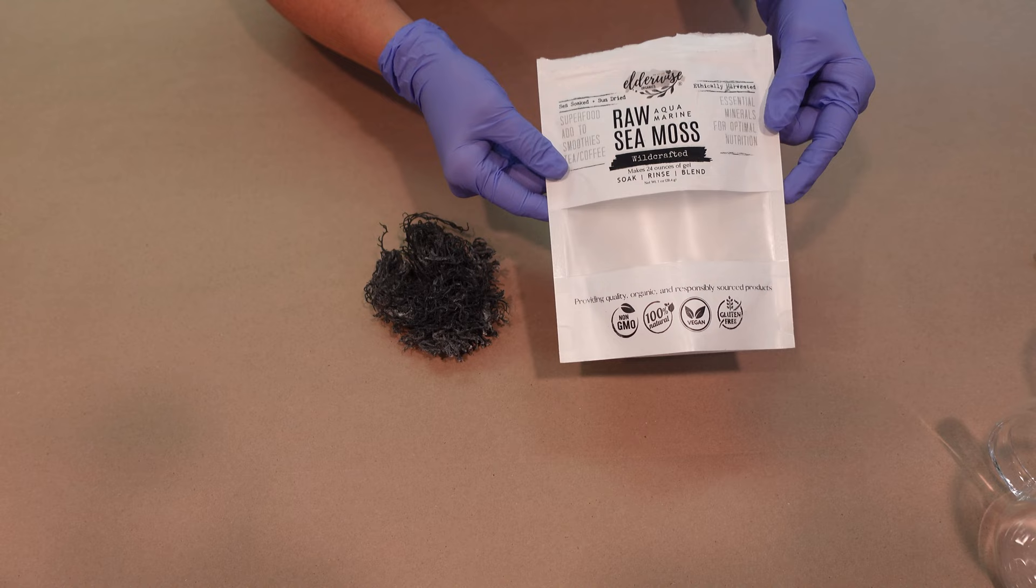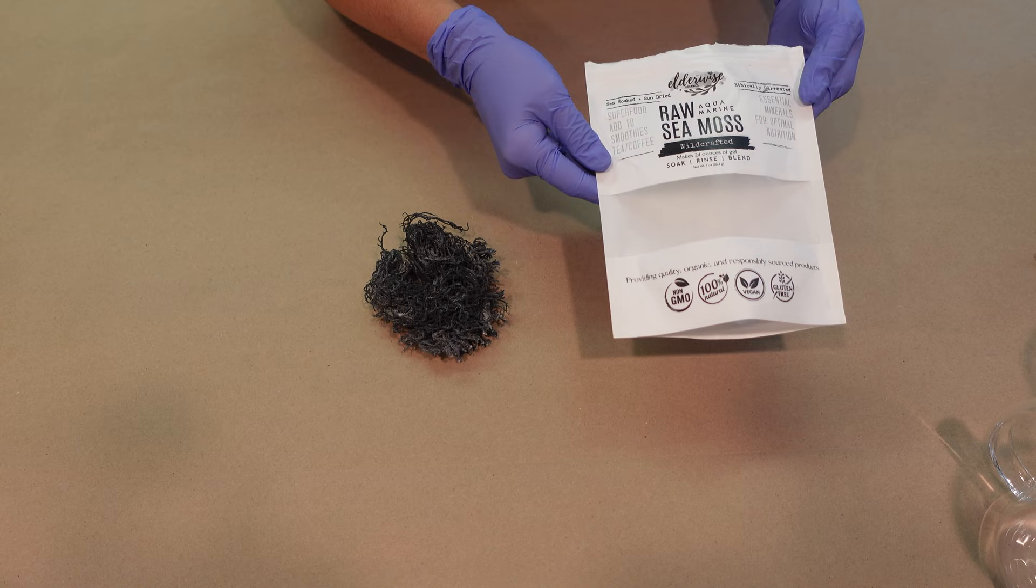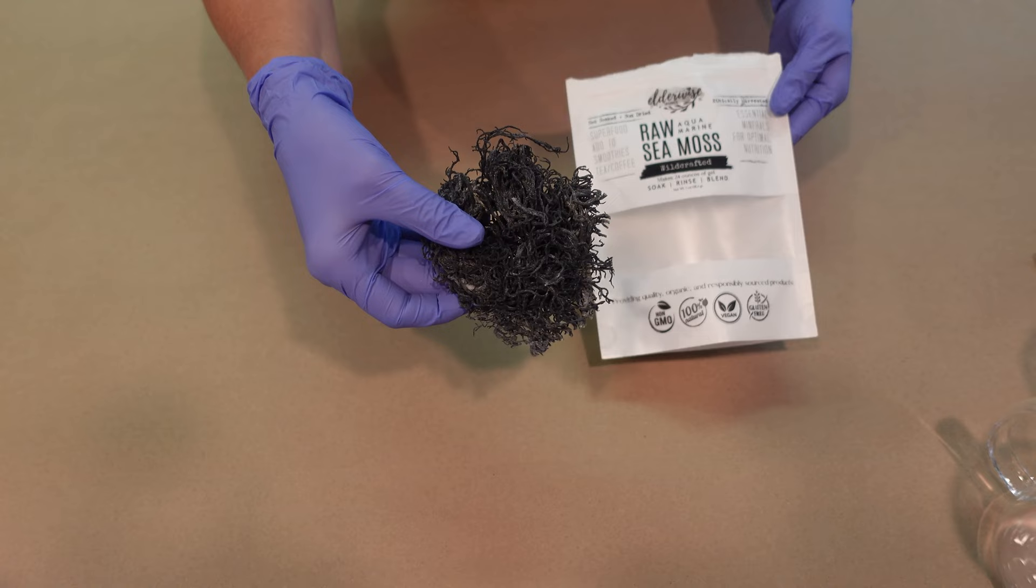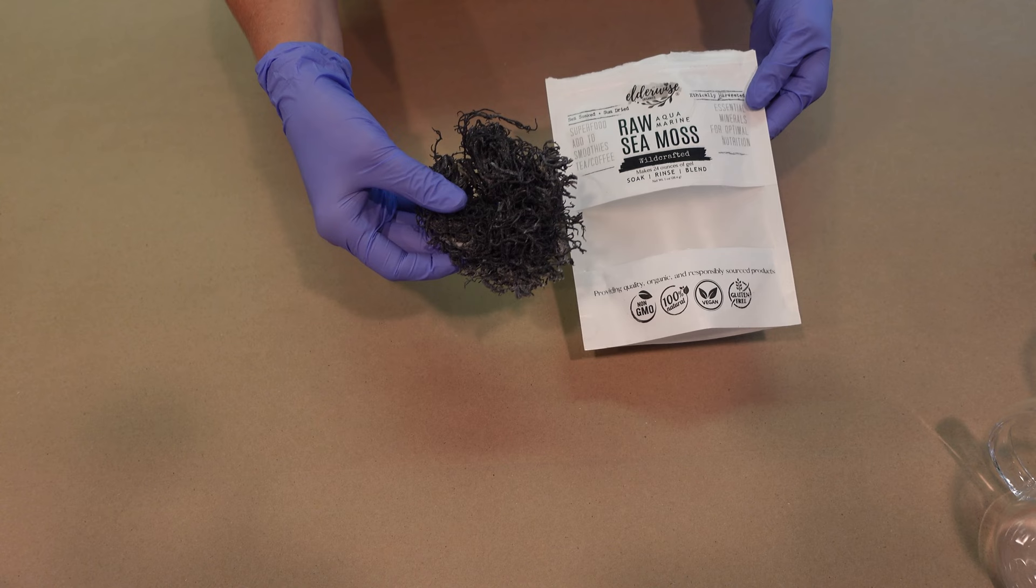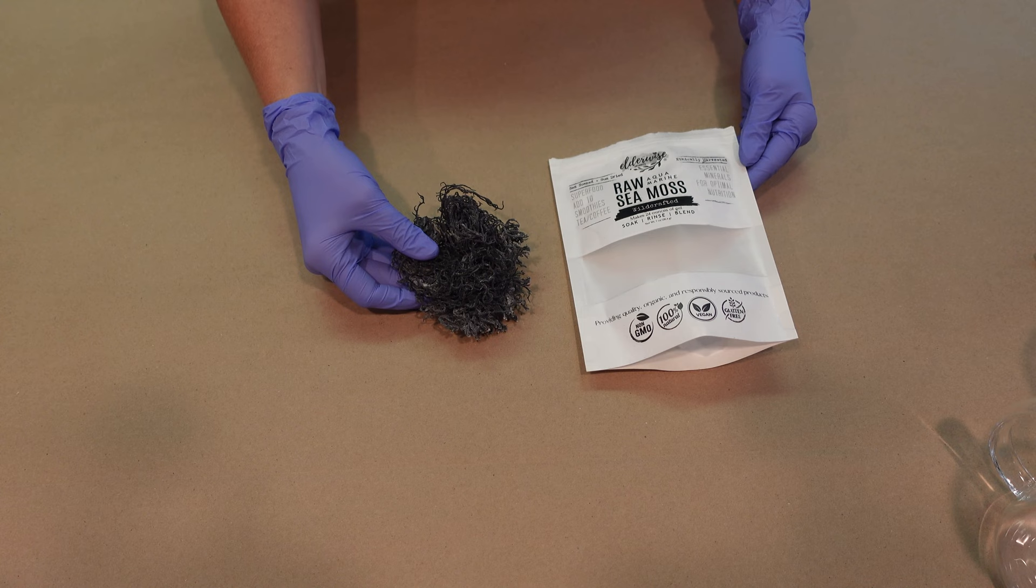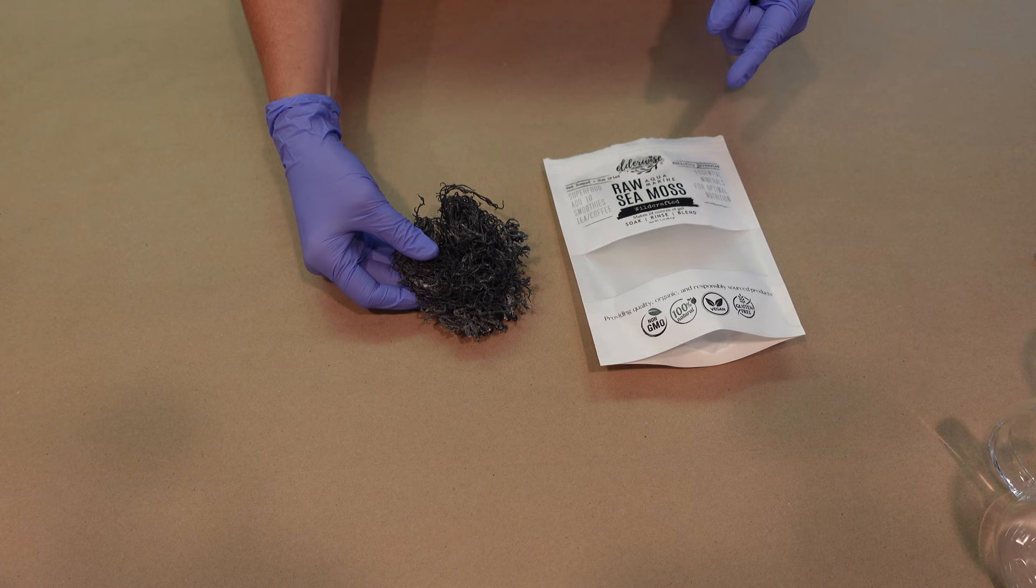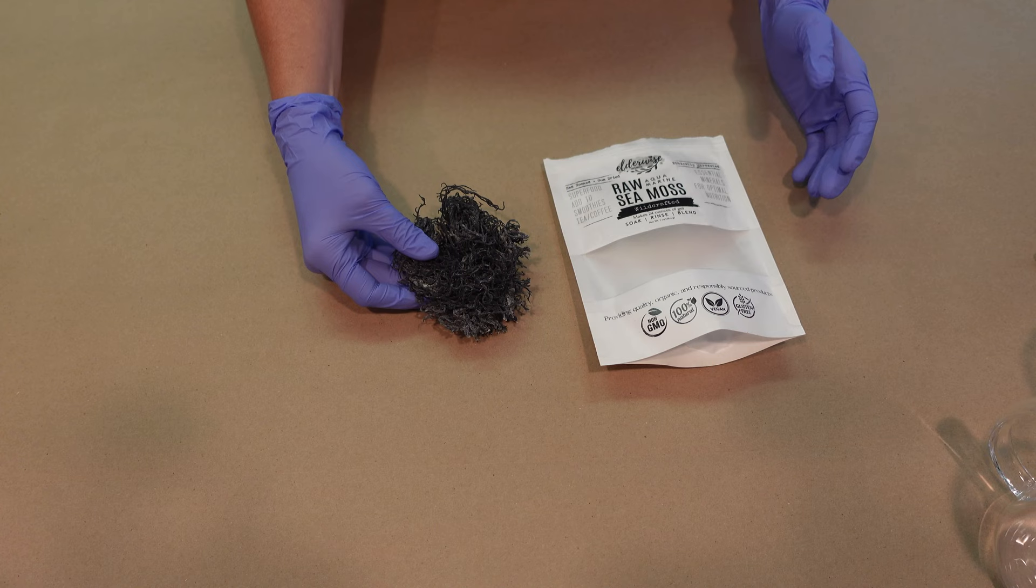First things first, we're going to be using some raw aquamarine sea moss. This is wild-crafted and organic. I got it off of Amazon. The aquamarine—it doesn't matter what color you use. Sea moss is considered a superfood because it's packed full of vitamins and minerals that your body needs every day, but also for your hair care and your skincare routine.